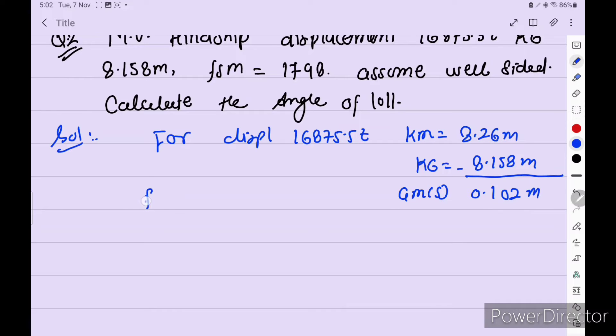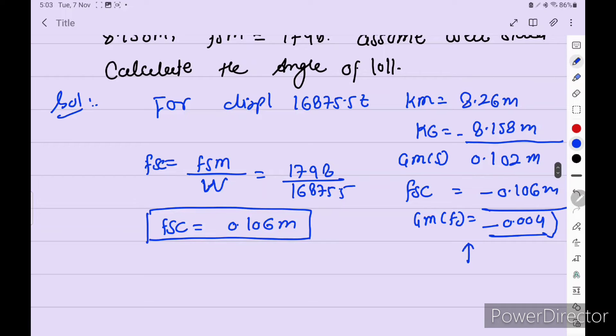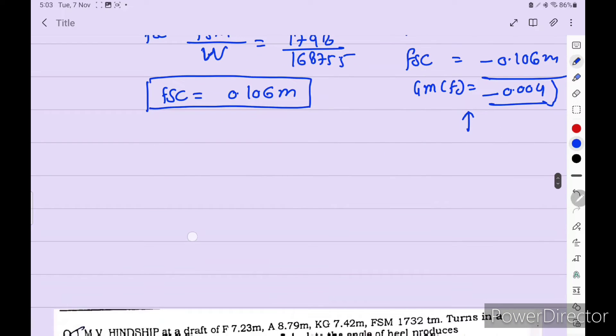Okay. Now FSM is given. So FSC is equal to FSM upon displacement. So 1798 divided by 16875.5. So we get FSC is equal to 0.106 meter. Now FSC we have to write here minus 0.106. So GM fluid we get minus 0.004. Okay. Always negative. GM fluid initial.